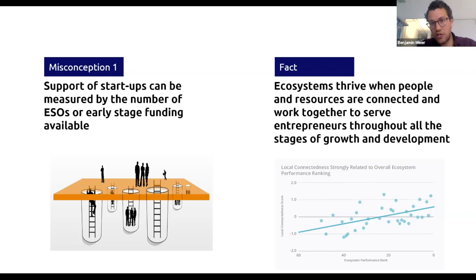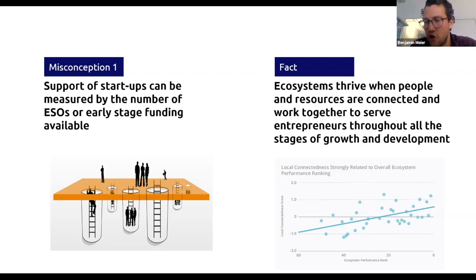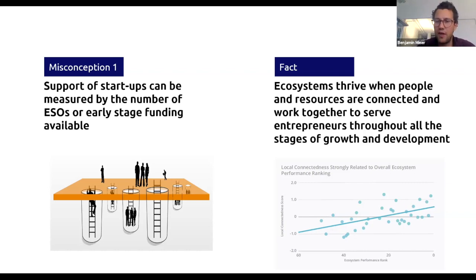It's also why we have this network approach, because only through a network approach can we ensure that the whole is greater than the sum of its parts. But that only works if we have a common vision, if we start working together, and if collaboration between those actors is actually happening. The key differentiator between a thriving and a not-so-thriving ecosystem is when the resources and the people within are really connected and they serve the entrepreneur throughout the stages of growth and development. You can be a small ecosystem in number, but if you have a very vibrant ecosystem, that is still a very healthy ecosystem.